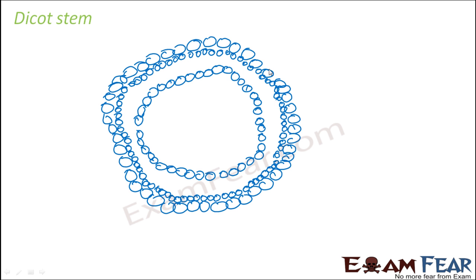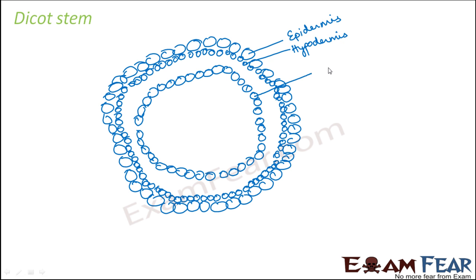Here we will try to draw a rough figure and then see how it looks like. In the dicot stem, the outermost layer as usual is going to be the epidermis. Just below the epidermis you have hypodermis, and here again you can see another layer called endodermis. So these three layers are common in case of a dicot stem.